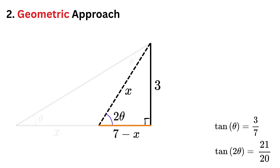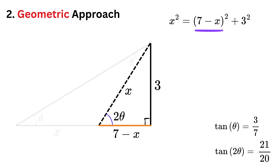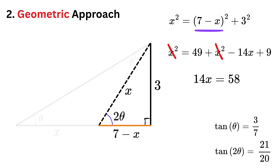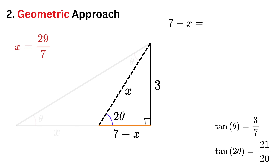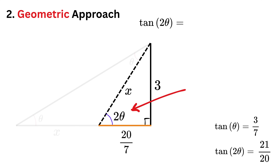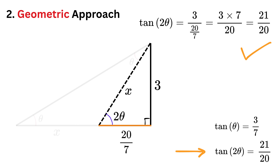Now consider this small right triangle. We have sides as 3 and 7 minus x, and hypotenuse as x. Use Pythagoras theorem to expand and simplify. x squared gets cancelled out, and we are left with 14x equals 58, or x equals 58 over 14, which is 29 over 7. So 7 minus x equals 7 minus 29 over 7, or 20 over 7. Therefore, tan of 2 theta equals opposite over adjacent, or 3 over (20 over 7), which equals 3 times 7 over 20, or 21 over 20. We again got the same result.